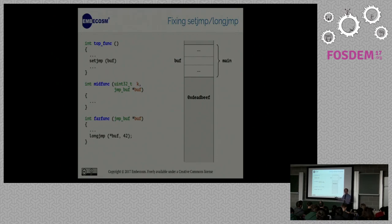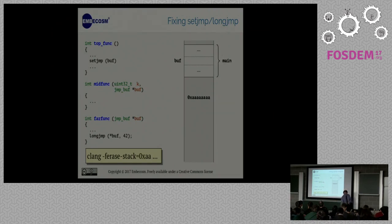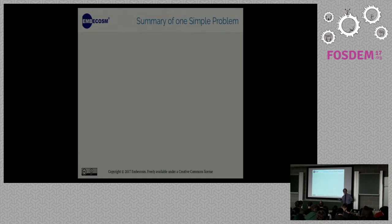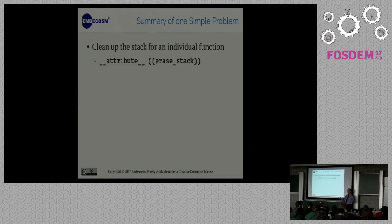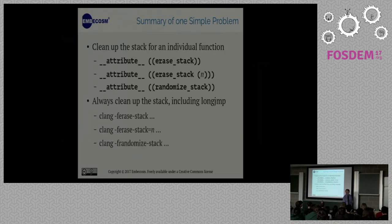However, since we know where we came from and where we're going to in long jump, there's no reason in principle why long jump couldn't wipe out its entire stack. We could do it by having a special long jump function, long jump secure, that added that code, or we could have minus f erase stack which just says whatever the function, or even if it's a long jump function, erase the stack as you return. And that is all fairly straightforward. We've done most of that. We haven't actually done the last bit because the customer we were working for wasn't terribly concerned about long jump.